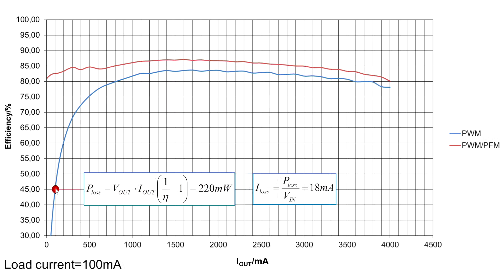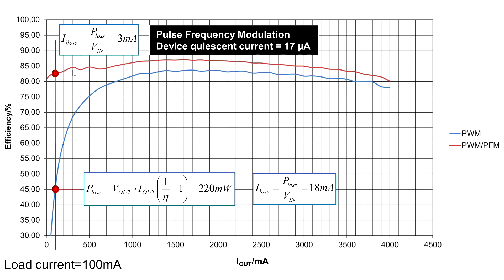And now our light load efficiency comes into game. The red curve now represents the TPS62135 operating in pulse width modulation at nominal current. And as you reduce the load current, we reduce the switching frequency and operate with pulse frequency modulation, keeping the efficiency up. And at 100 milliamp load current, we achieve above 80% efficiency that reduces our conversion loss current from 18 milliamps down to 3 milliamps.